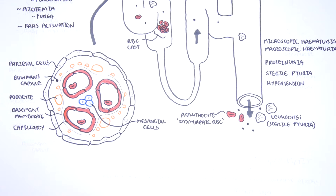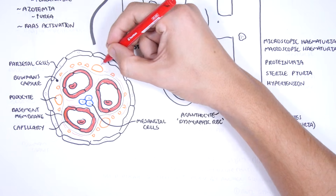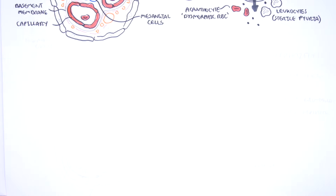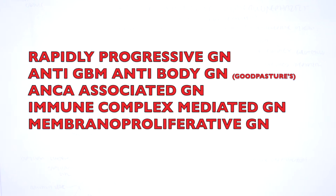There are many causes of glomerulonephritis, and it can be part of a spectrum. If proteinuria exceeds 3.5 grams in 24 hours, there is a nephrotic component to it. Different causes of glomerulonephritis — specifically nephritic syndrome — include rapidly progressive glomerulonephritis, anti-glomerular basement membrane antibody disease (also known as Goodpasture syndrome), ANCA-associated glomerulonephritis or vasculitis, immune-complex-mediated glomerulonephritis (which includes IgA nephropathy, post-streptococcal glomerulonephritis, and lupus nephritis), and finally membranoproliferative glomerulonephritis.